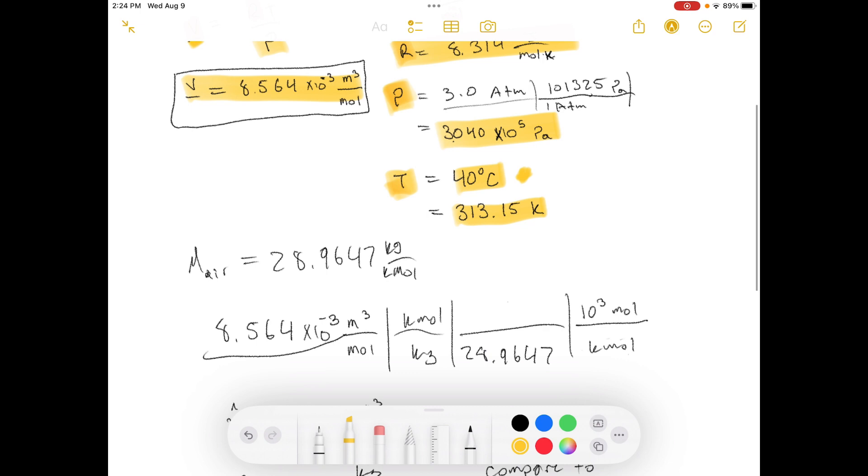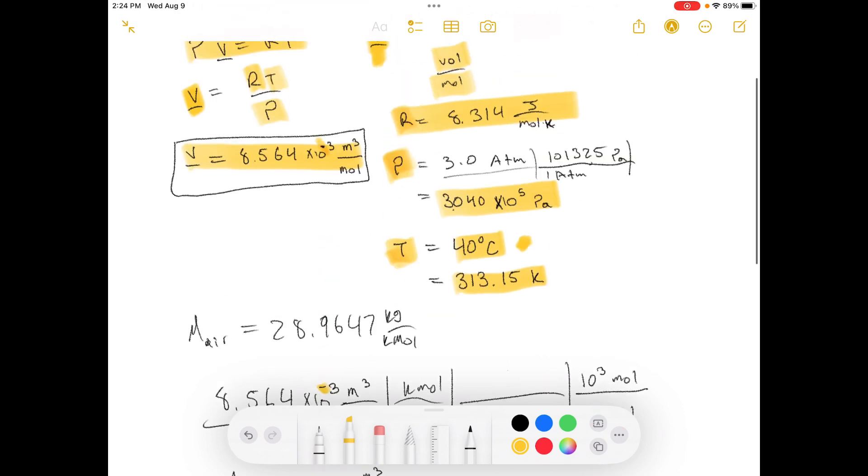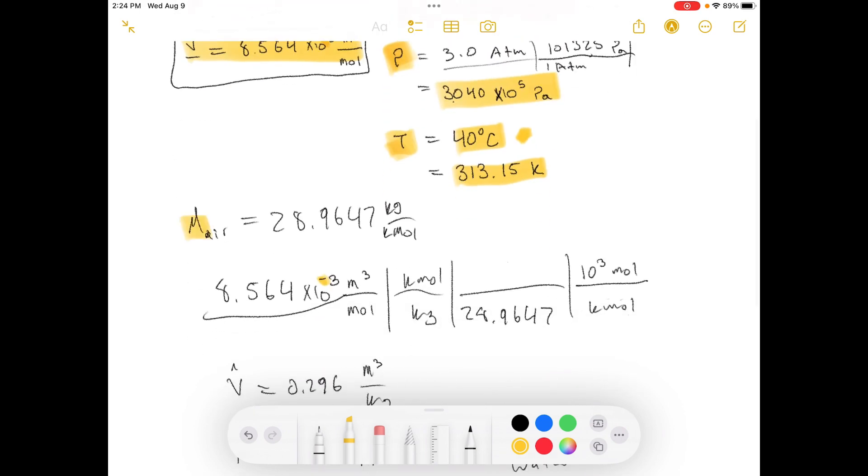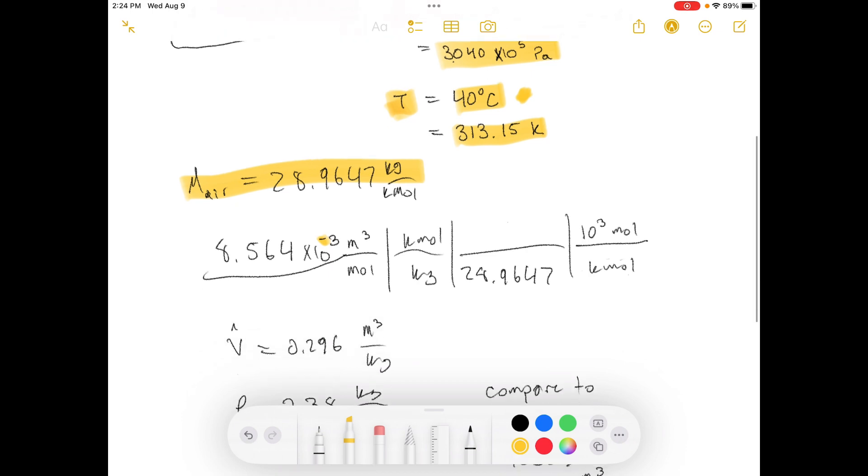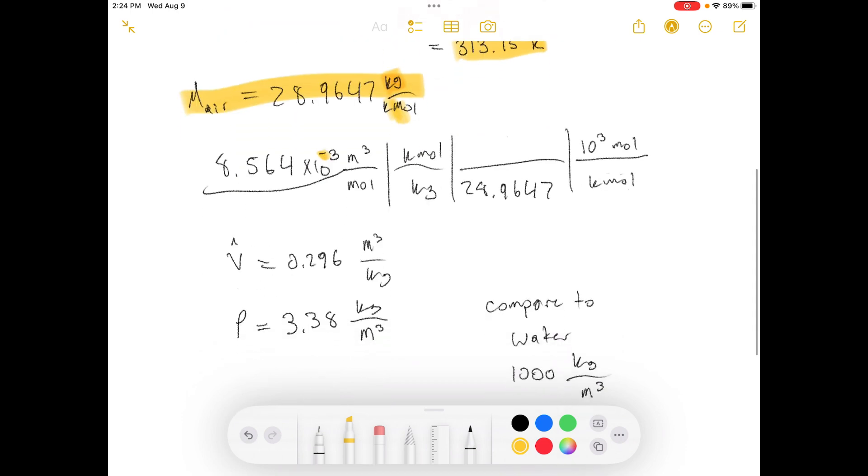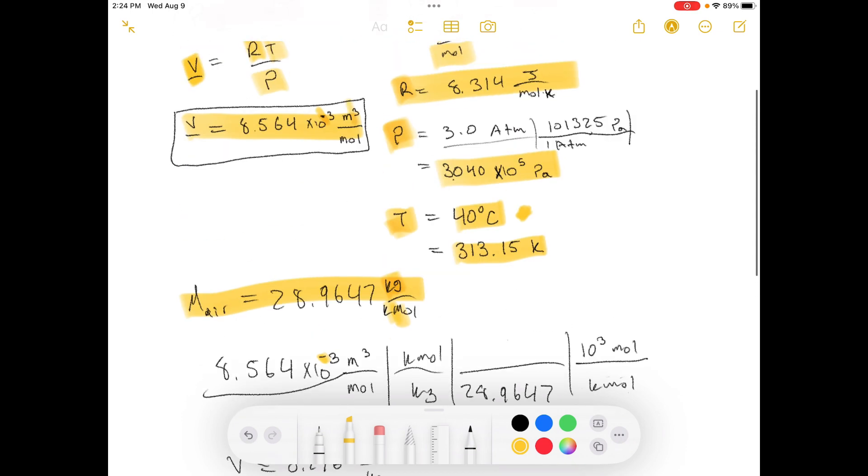So here, I made one adjustment. I forgot to put the little minus sign there, so I fixed that up. This is the molar mass of air. That's kilograms per kilomole. Our answer is in meters cubed per mole.